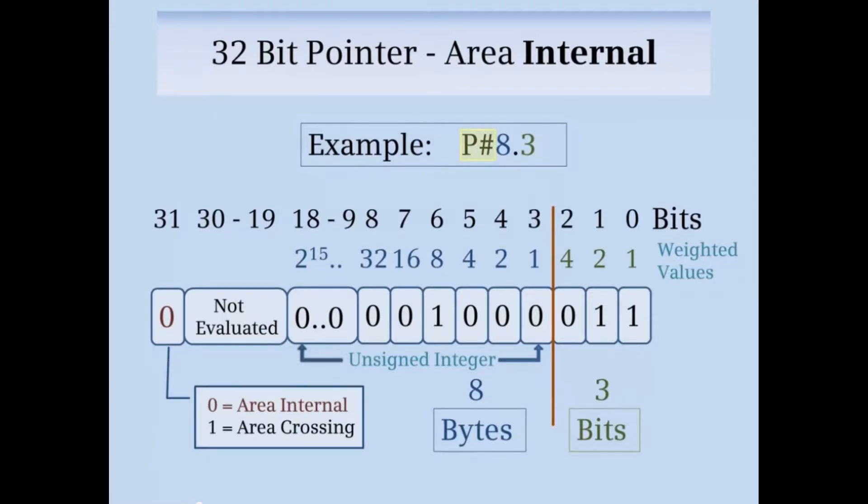The P# causes the ones and zeros to be formatted such that bits 0 through 2 correspond to the bit address and bits 3 through 18 correspond to the byte address which is stored as an unsigned integer. Bits 0 to 2 have the weighted values 1, 2, and 4. The minimum value can be 0 and the maximum value 7 which corresponds to the bits of a byte. The weighted values start over for bits 3 through 18 which contain the byte part of the address. The byte address range is from 0 to 2 to the 15th power.